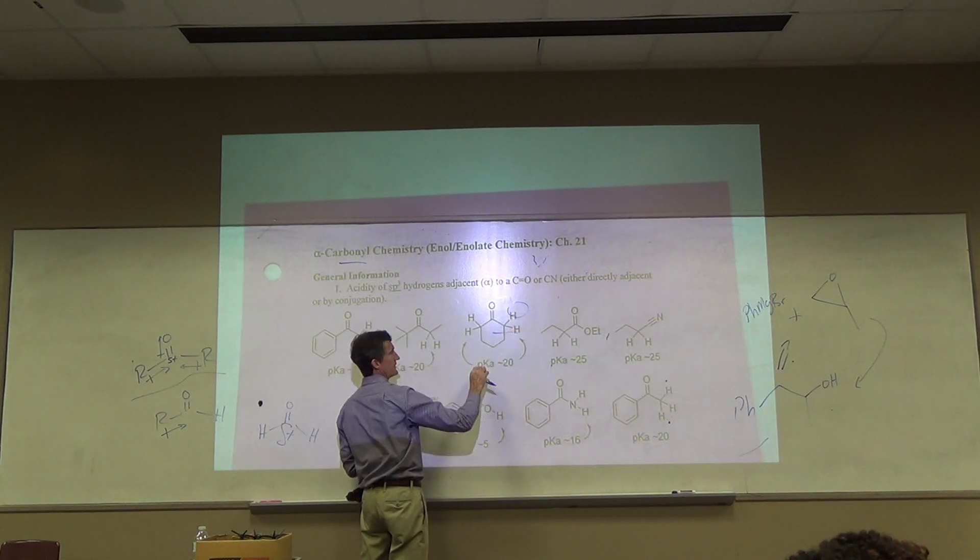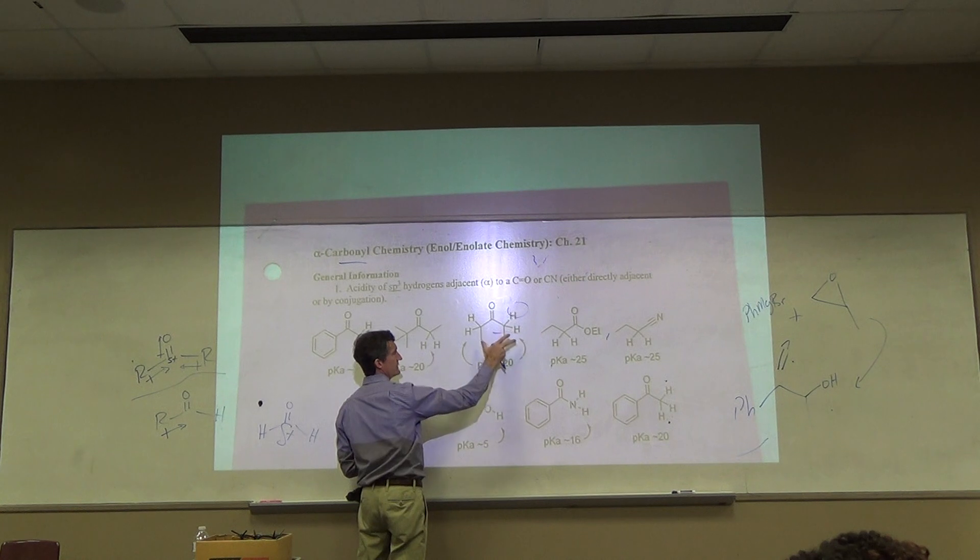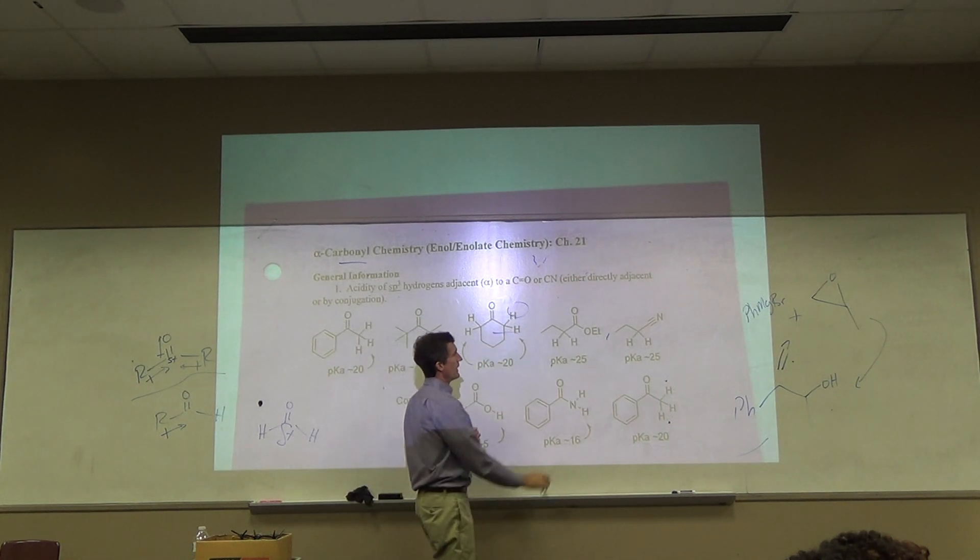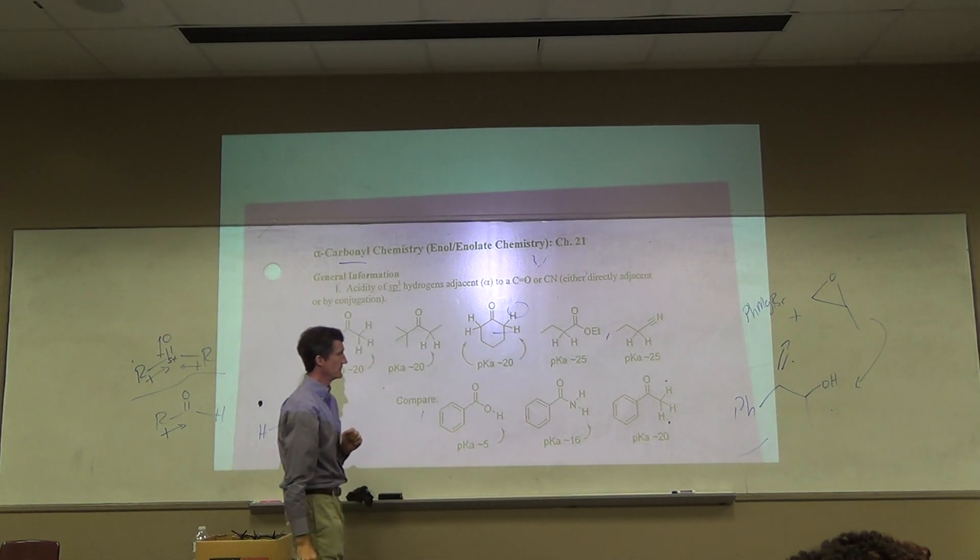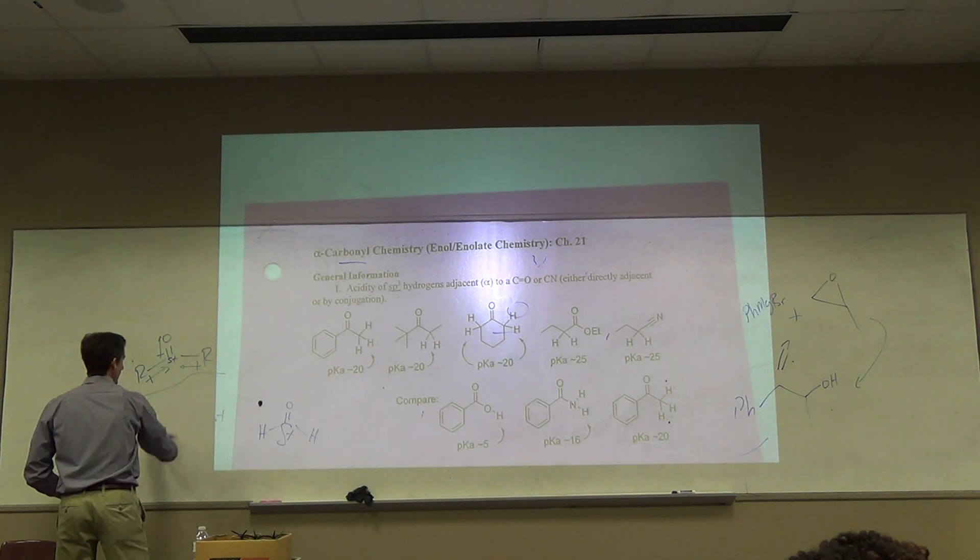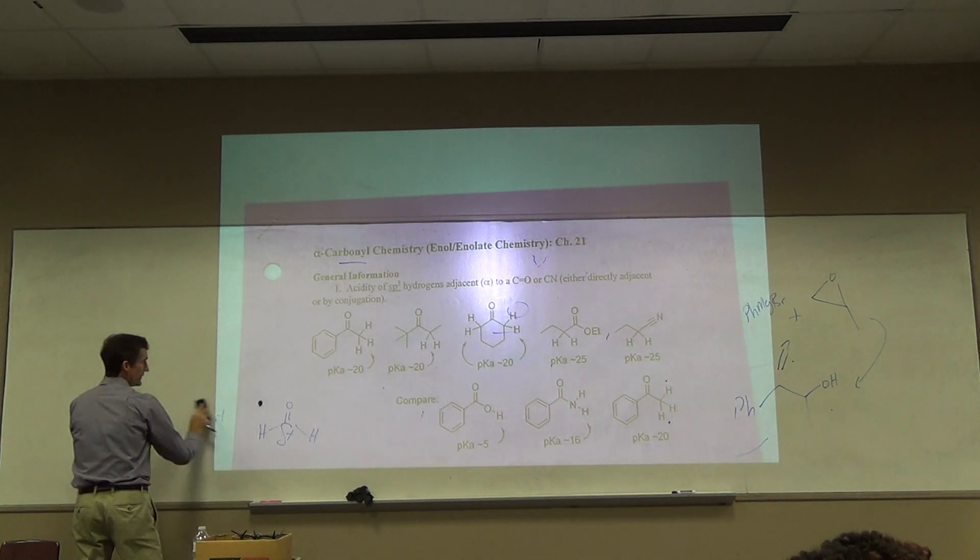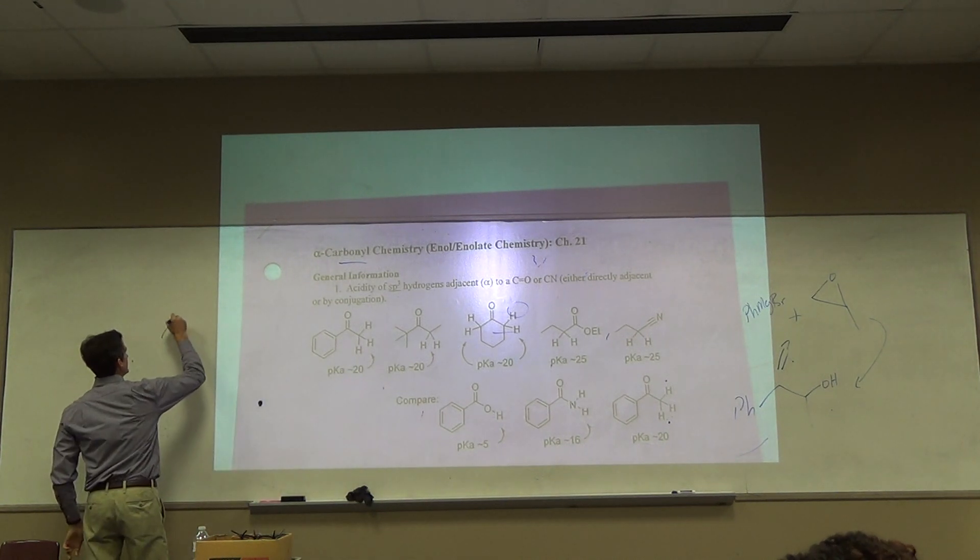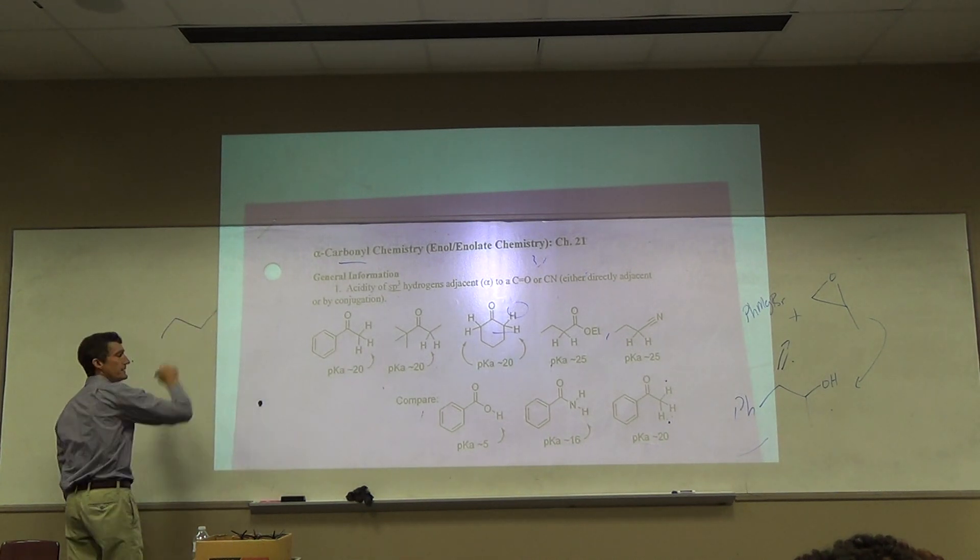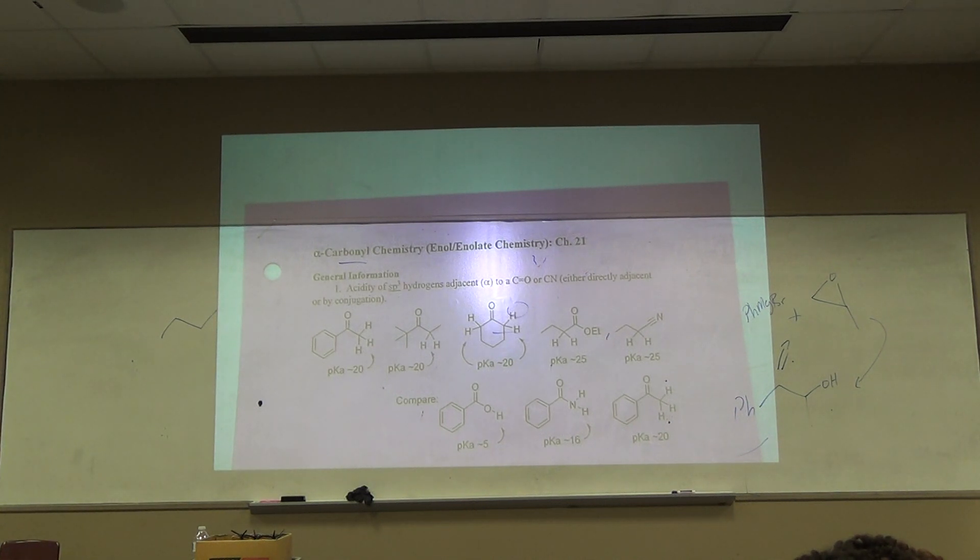Here's a ketone, symmetrical ketone, alpha CH's on both sides. About 20. Esters, the alpha CH's are not quite as acidic. First off, why are these acidic at all? What's the pKa of a regular CH? Just like hexane or something. What's the pKa of these H's? About 40 or greater. And that's sort of the maximum, just bad, not acidic.